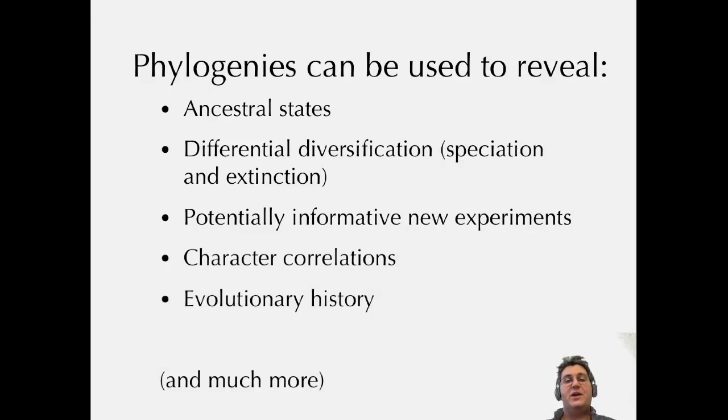So what I'm trying to show you today is what phylogenies can be used to reveal. Ancestral states, differential diversification, speciation extinction processes, informative new experiments, character correlations, evolutionary history, and of course, much, much more. So hopefully you're excited enough to learn about what else we can do over the course of this course.